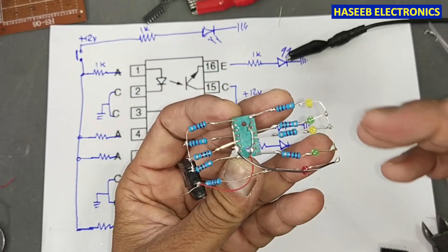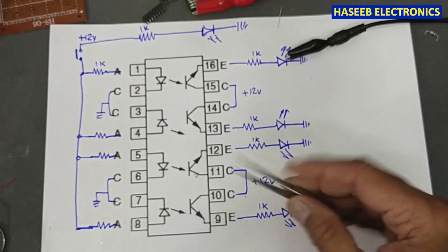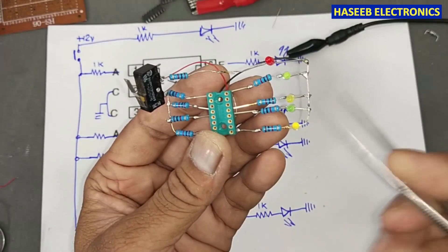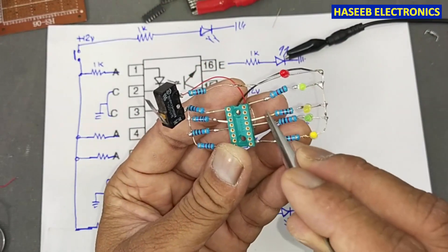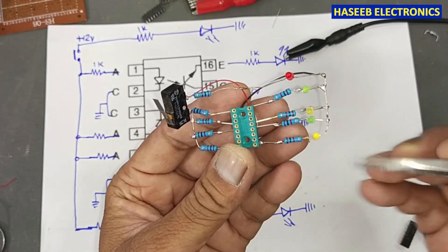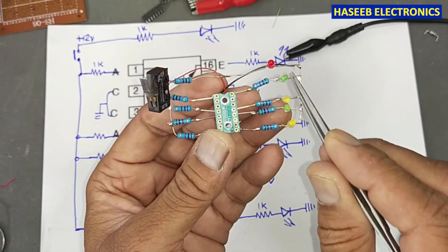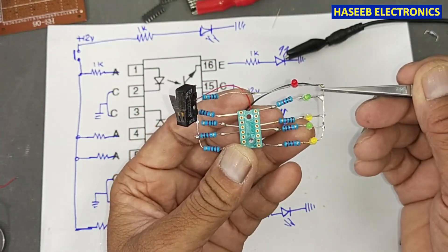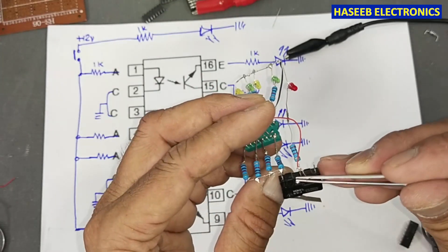This is the ground connection. On the output side, pins 9, 12, 13, and 16 each have a 1 kilohm resistor. I connected the anode of each LED to the resistors, cathodes to ground, and this one is input power.